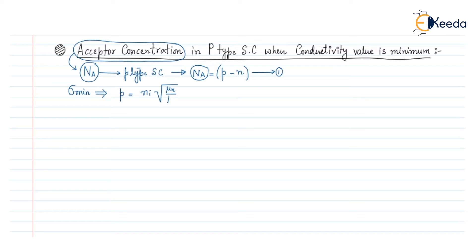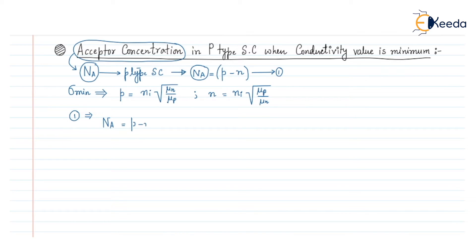Similarly, the electron concentration for sigma minimum is given by Ni times the square root of mu_p divided by mu_n. If we put the values of p and n into equation number one, we can find the value of Na. So Na equals p minus n, where p equals Ni times the square root of mu_n over mu_p, and n equals Ni times the square root of mu_p over mu_n.